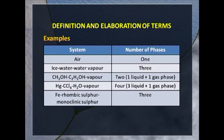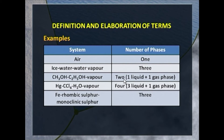Let me elaborate with certain examples. Air will constitute only one phase because the gases are completely miscible in each other. Ice, water, and water vapour will have three phases — one solid, one liquid, one vapour. If I prepare a system having methanol, ethanol and vapour, there will be two phases: one liquid phase and one gas phase, because the two liquids are completely miscible.